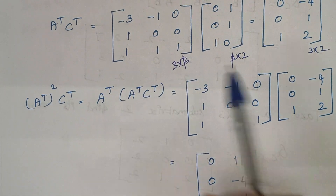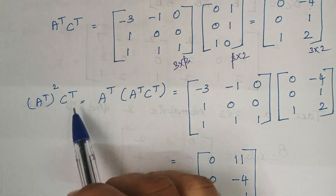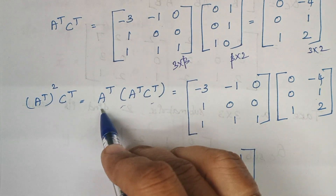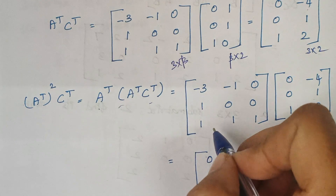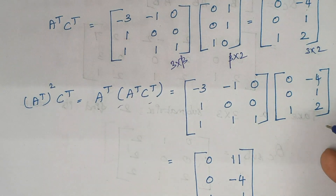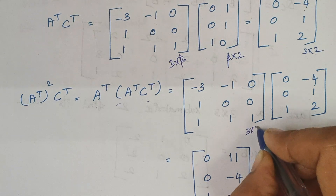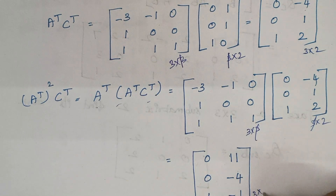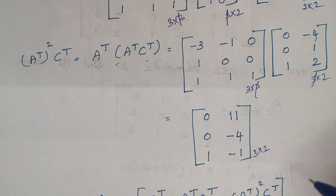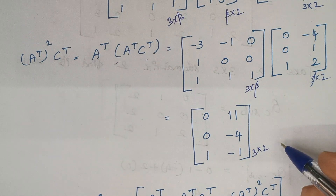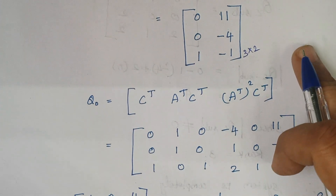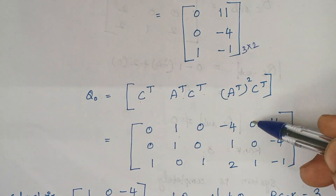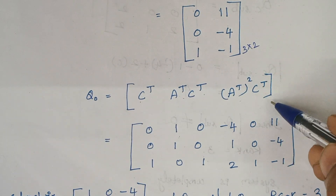After that we proceed with (Aᵀ)² into Cᵀ. We already found AᵀCᵀ, so just multiply that result with the Aᵀ matrix again. A transpose is 3×3 and AᵀCᵀ is 3×2, so the final output matrix is 3×2. Now we have calculated all required values: the first two columns are Cᵀ, the next two are AᵀCᵀ, and the last two columns are (Aᵀ)²Cᵀ.